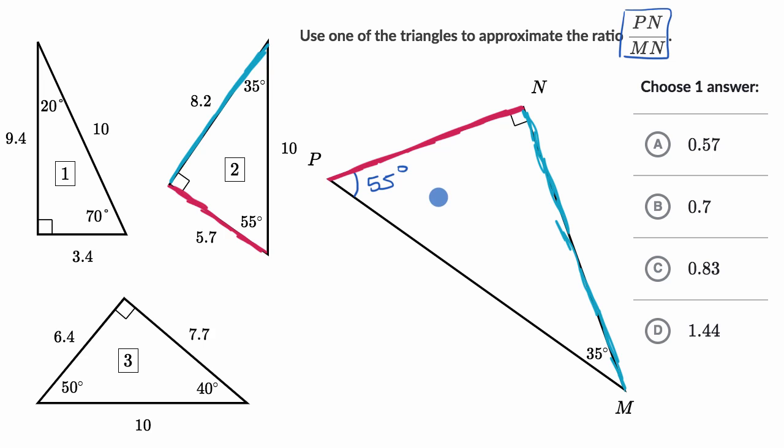Now, since these triangles are similar, the ratio of the red side, the length of the red side over the length of the blue side is going to be the same in either triangle. So let me write it this way. The length of segment PN over the length of segment MN is going to be equivalent to 5.7 over 8.2.